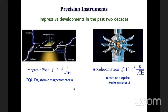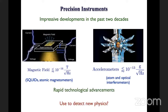The story gets very interesting because of what's happened in technology in the last two decades. There have been very impressive developments in precision instrumentation — our ability to measure small numbers very accurately. Today one can measure magnetic fields smaller than a femto tesla with SQUID and atomic magnetometers. One can measure accelerations less than 10^-13 times the acceleration of gravity through atom and optical interferometers. In fact, that accelerometer number has recently improved to 10^-15 g.